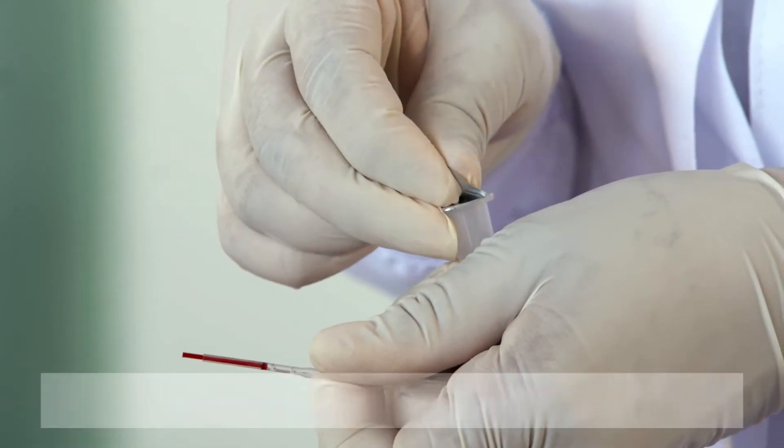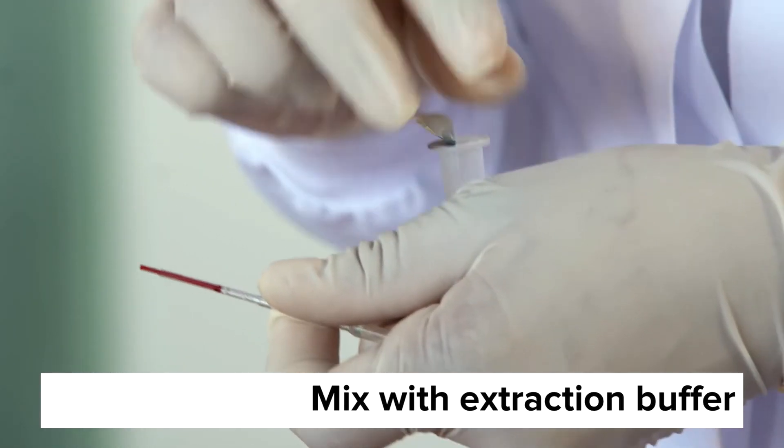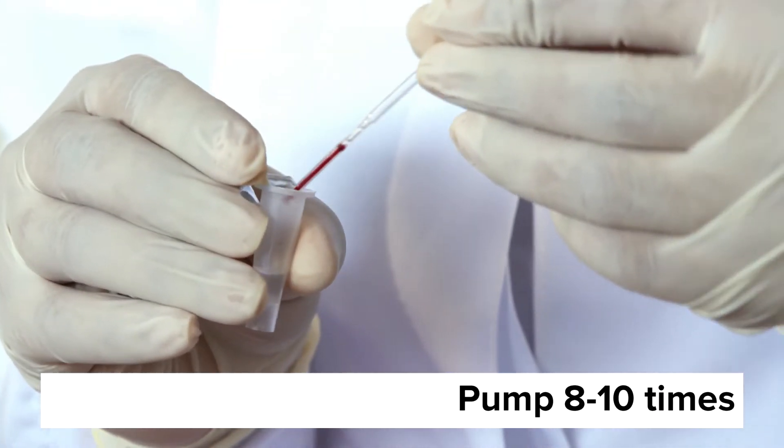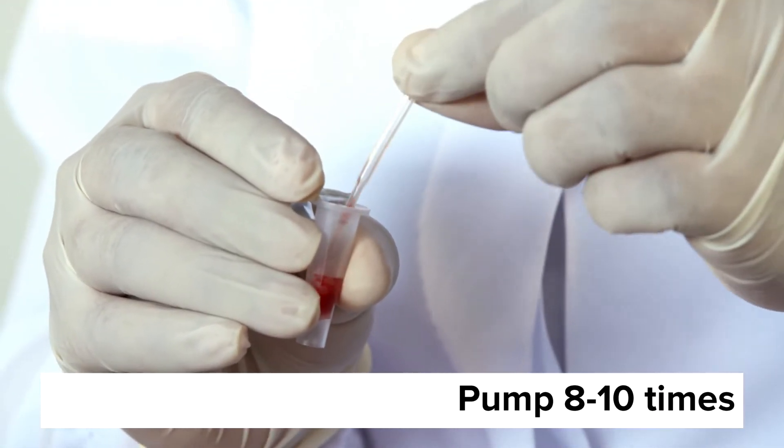Put the sample collector into the extraction buffer, press and release the bulb of the sample collector 8 to 10 times to mix the blood with the extraction buffer.